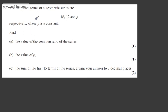In question 1, we're told the first three terms of the geometric series are 18, 12 and p respectively, where p is a constant. We're asked to find in part A for one mark the value of the common ratio of the series, in part B for one mark the value of p, and in part C for two marks the sum of the first 15 terms of the series, giving our answer to three decimal places.